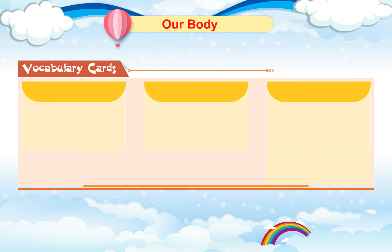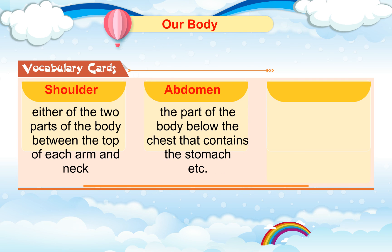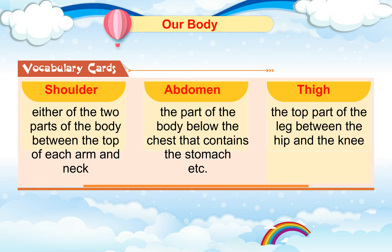Vocabulary Cards. Shoulder: Either of the two parts of the body between the top of each arm and neck. Abdomen: The part of the body below the chest that contains the stomach etc. Thigh: The top part of the leg between the hip and the knee.